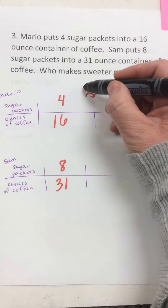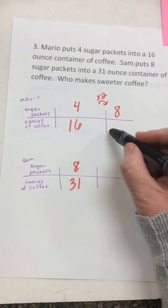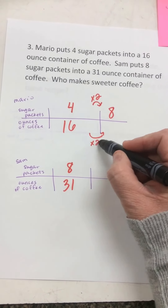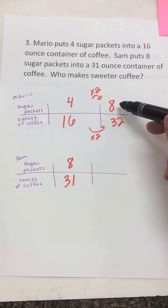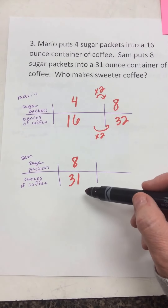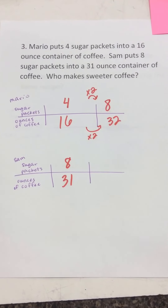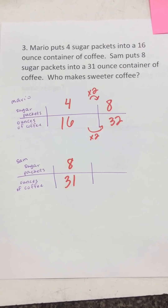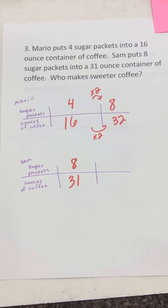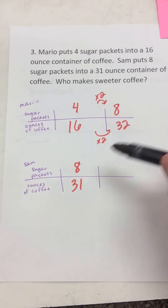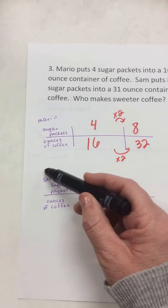So what if I scale Mario up to eight packets? If Mario uses four sugar packets, I multiply by two. That means in 32 ounces of coffee, he uses eight sugar packets. And Sam, in 31 ounces of coffee, also uses eight sugar packets. They both used eight packets of sugar. How much coffee was with those eight packets? This one has 32 ounces and this one has 31 ounces. The one with less coffee for that same amount of sugar would be sweeter — so Sam's is sweeter.